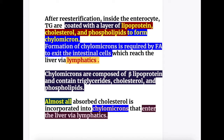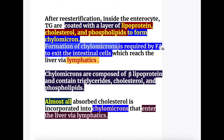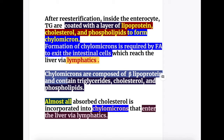After re-esterification inside the enterocytes, triglycerides are coated with a layer of beta lipoproteins, cholesterol and phospholipids to form chylomicrons. Formation of chylomicrons is required by long chain fatty acids to exit the intestinal cells, which then reach the liver via lymphatics. Chylomicrons are composed of beta lipoproteins and contain triglycerides, cholesterol and phospholipids.